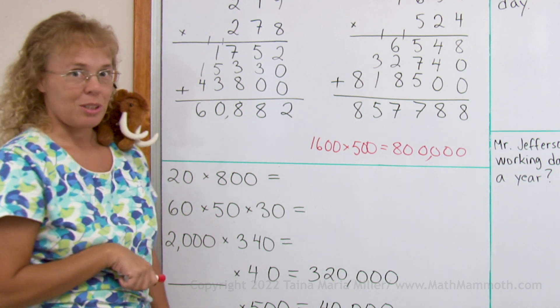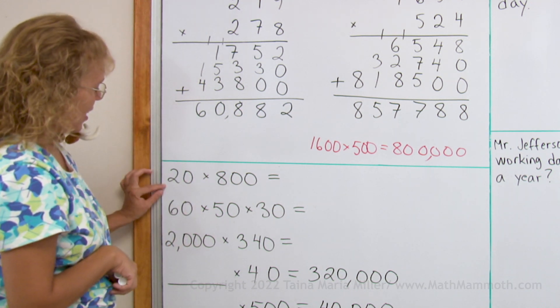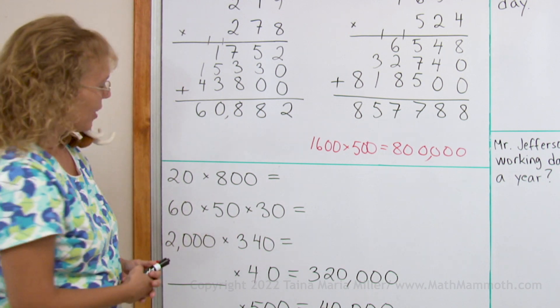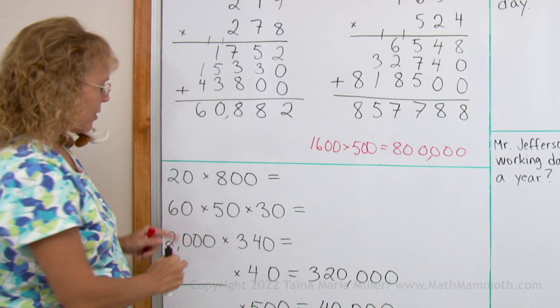Here we're going to review something, and that is how to multiply when there's lots of zeros. These are really easy, see? There's a shortcut. You remember that?